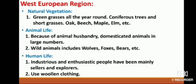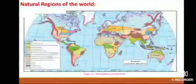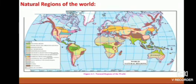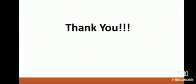Human life of this region: industrious and enthusiastic people have been mainly sailors and explorers. They use woolen clothing and have achieved progress in secondary and tertiary sectors. On page number 35 in your textbook there is one map which shows all the natural world regions — refer to this map. Thank you.